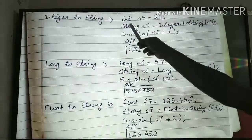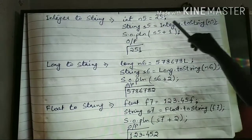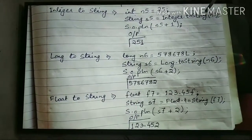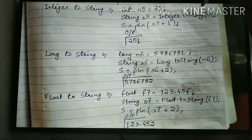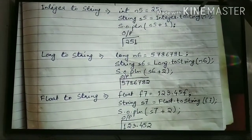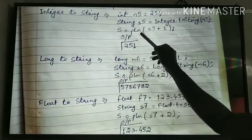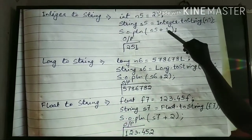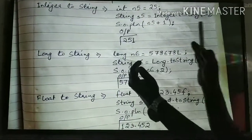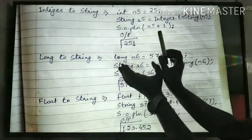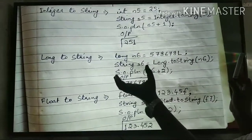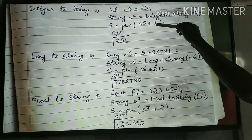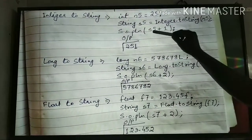Then integer to string. int n5 = 25, and String s5 = Integer.toString(n5). The wrapper class is Integer and the method name is toString — it signifies it needs to be converted into string. So integer 25 got converted into string and stored under s5. Now system.out.println(s5 + 1): s5 is 25 but in string form, so string plus a number will do concatenation — only joining, no mathematical addition. So 25 concatenated with 1 gives 251. Had it been of int type, 25 plus 1 would have been 26.